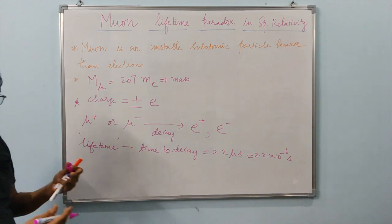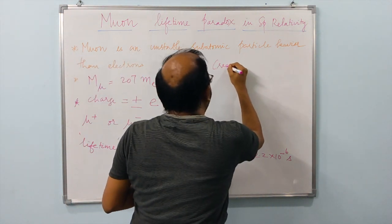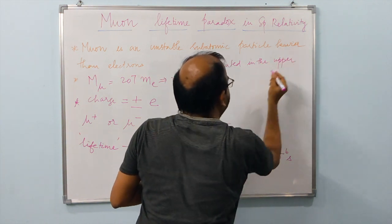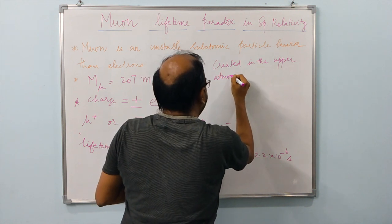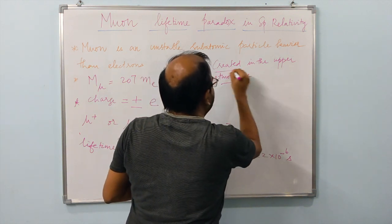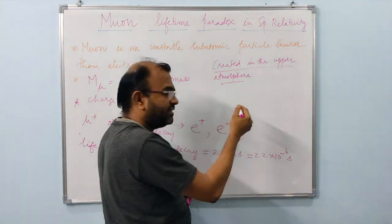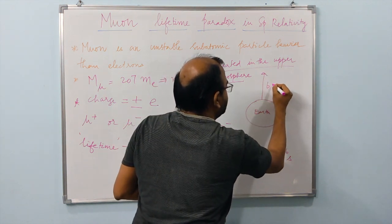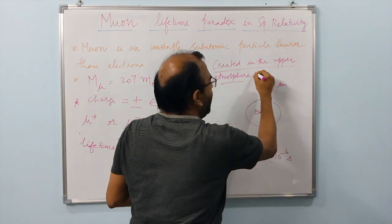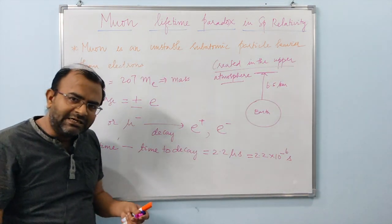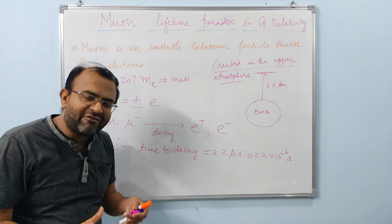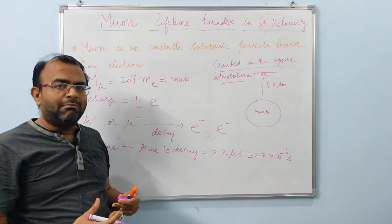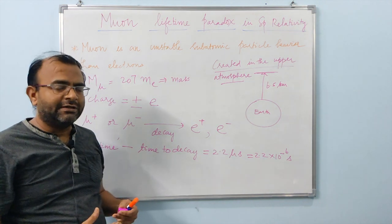Where is the muon created? Muons are created in the upper atmosphere above Earth's surface, typically at heights of about six and a half to seven kilometers. They are created due to the collision of cosmic ray particles — very fast-traveling particles — when they collide with molecules in the upper atmosphere.